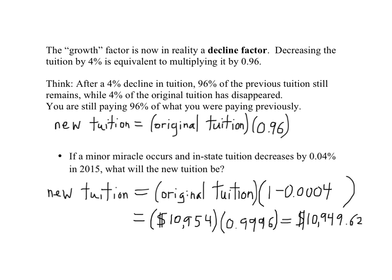We find that $10,954 times our decline factor of 0.9996 equals $10,949.62. That is what the new tuition will be. The decline factor 0.9996 comes from computing 1 minus 0.0004.